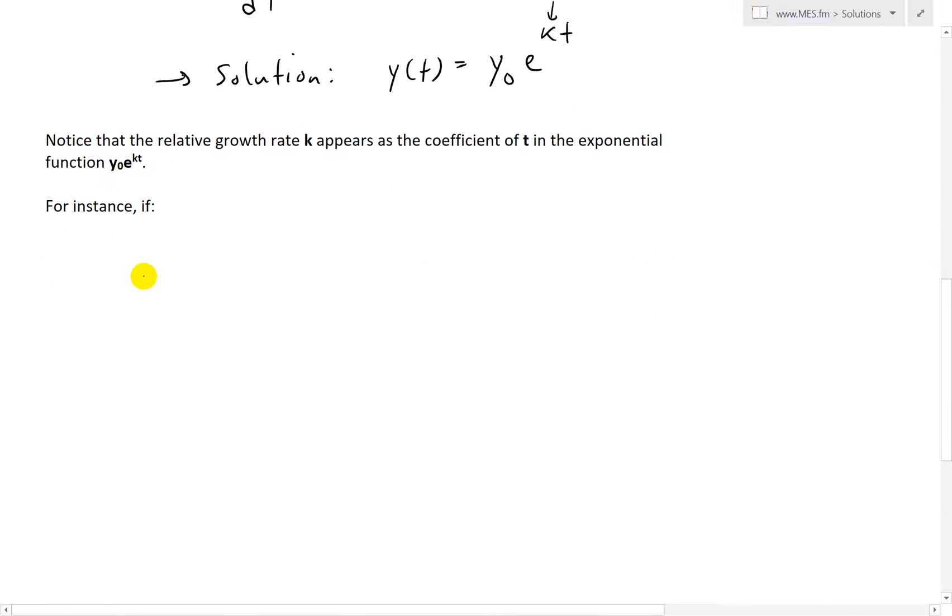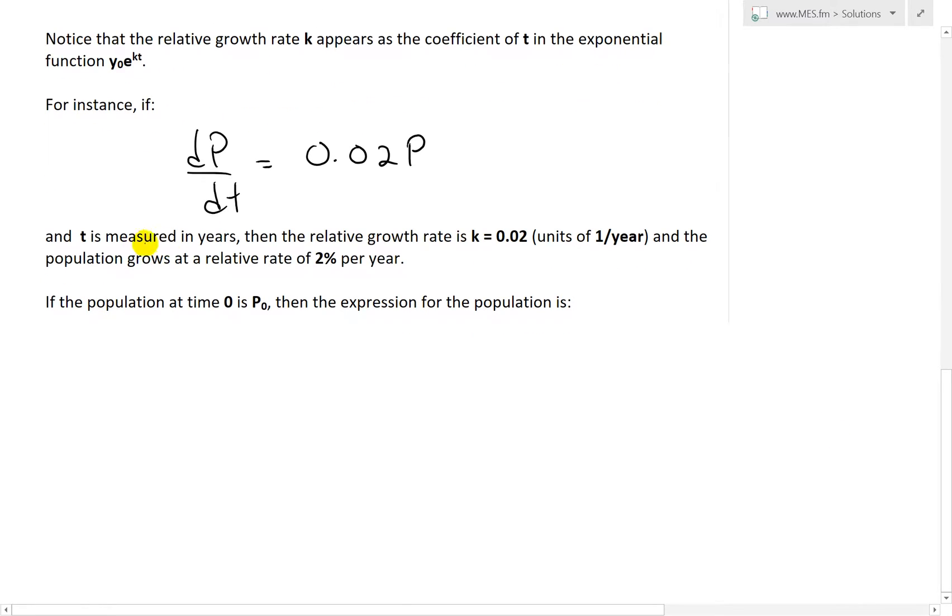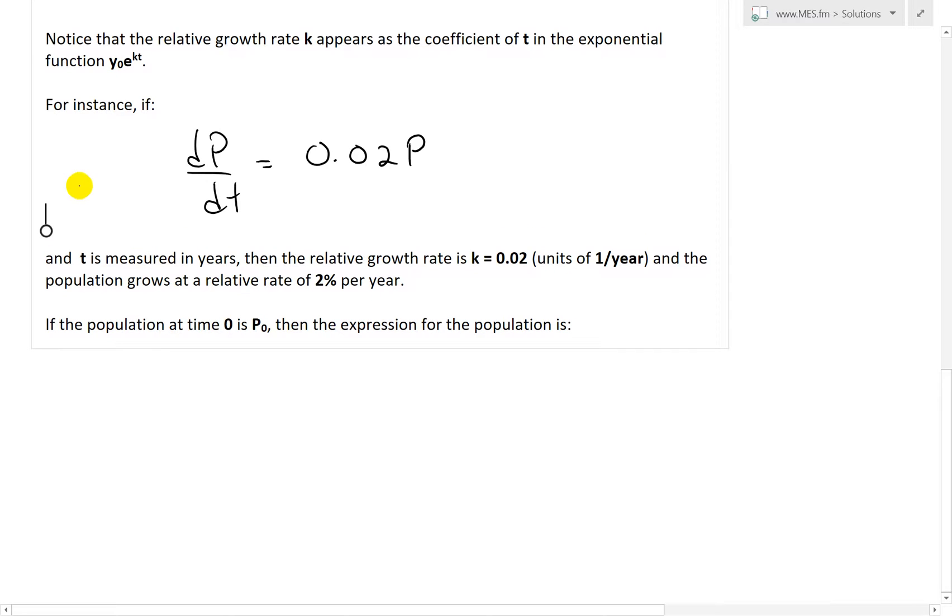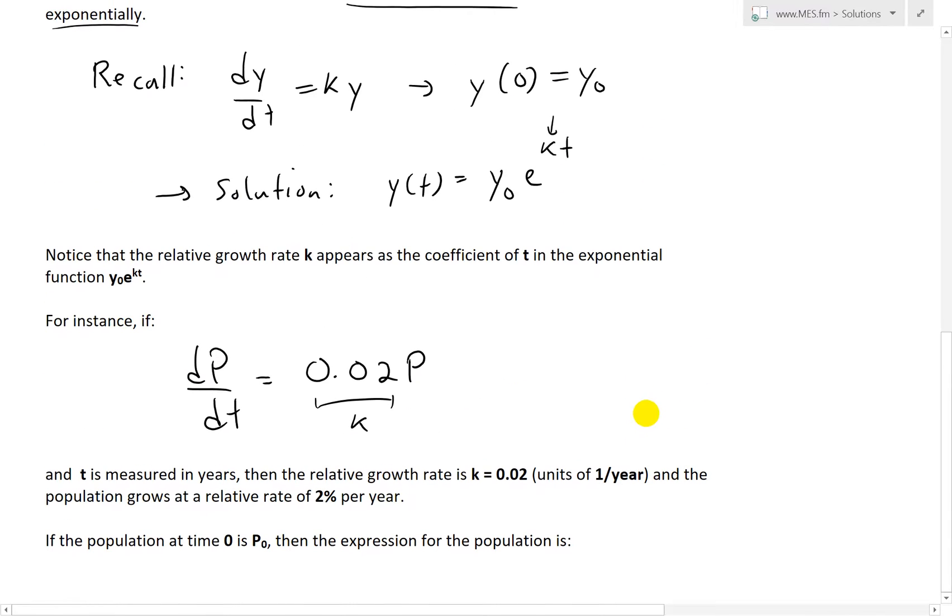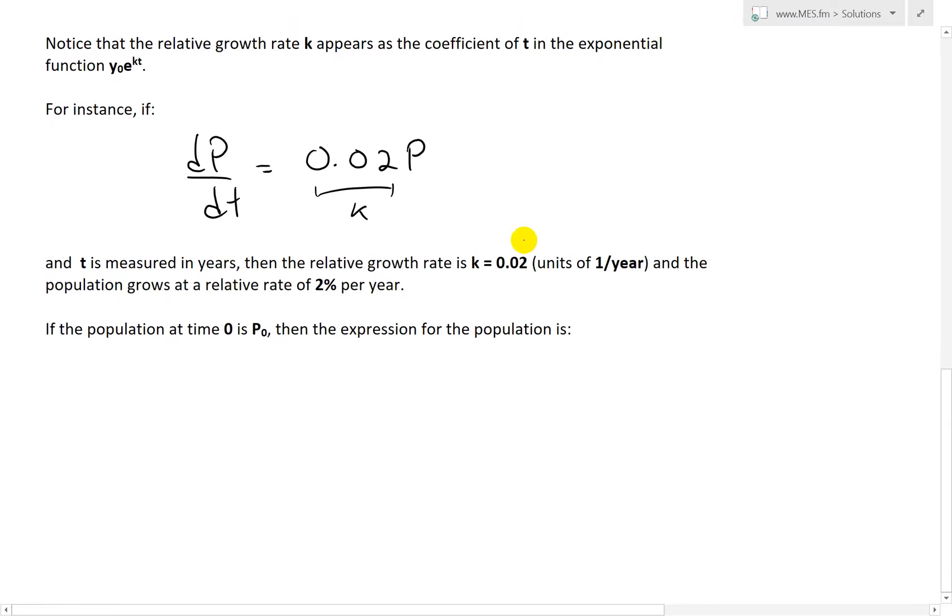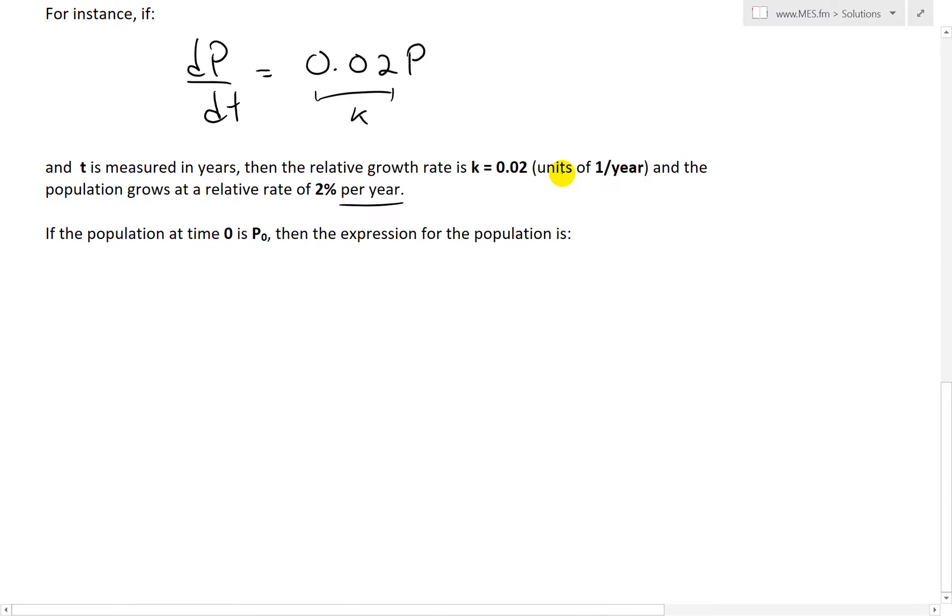So for instance, if we had dP/dt equals 0.02P, so that's our k. And t is measured in years, then the relative growth rate is this k value equals 0.02, with units of one over a year. Because we have this over here, e to the power of this has to be unitless, so then you divide by year, hence we have this per year.